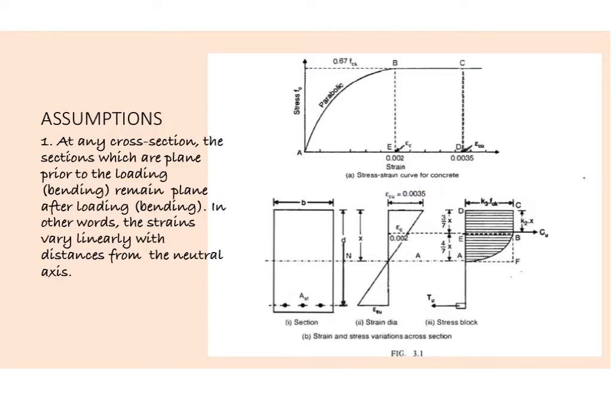This is the stress-strain curve for the concrete. At strain 0.002, the stress-strain curve is parabolic, and from strain 0.002 to 0.0035 the stress diagram is linear. In this diagram we show the section of a beam.